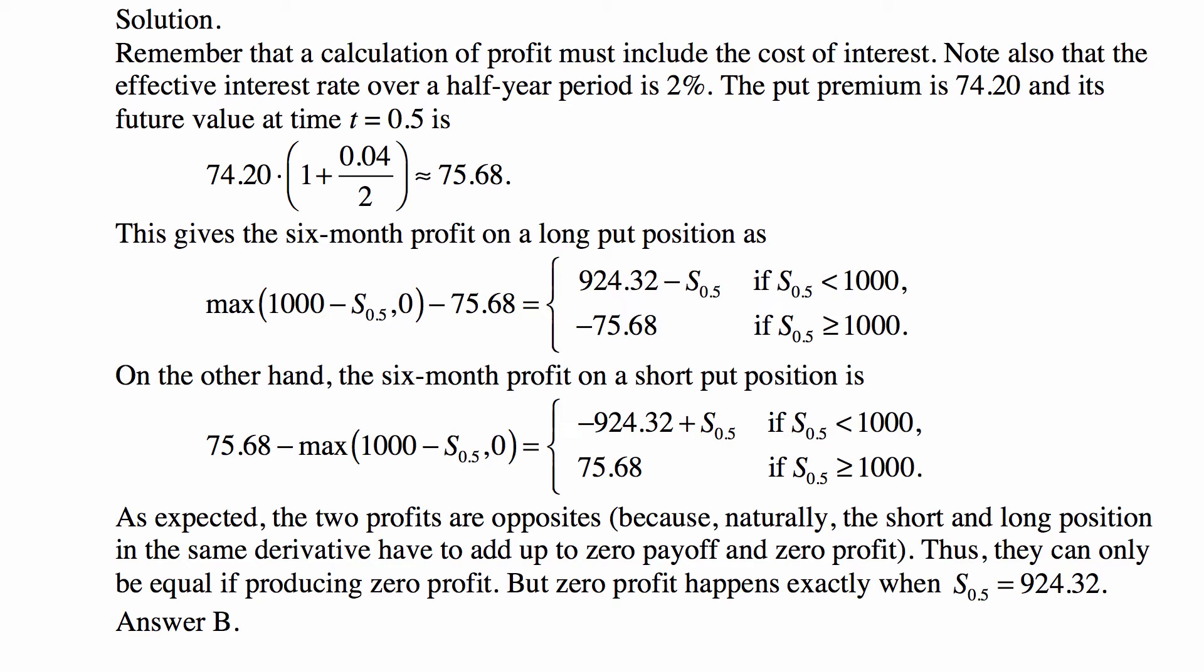Also note that the effective interest rate over a half-year period is 2%. The put premium is 74.20, and its future value after half a year is 74.20 accumulated at 2%, so approximately 75.68.